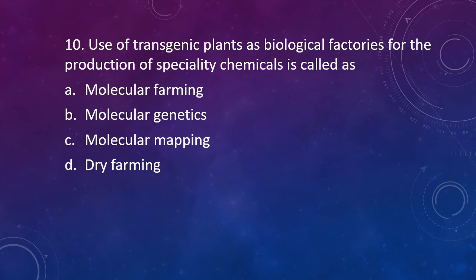Question 10: Use of transgenic plants as biological factories for production of specialty chemicals is called as? Option A: Molecular farming. Option B: Molecular genetics. Option C: Molecular mapping. Option D: Dry farming. The correct answer is Option A — Molecular farming.